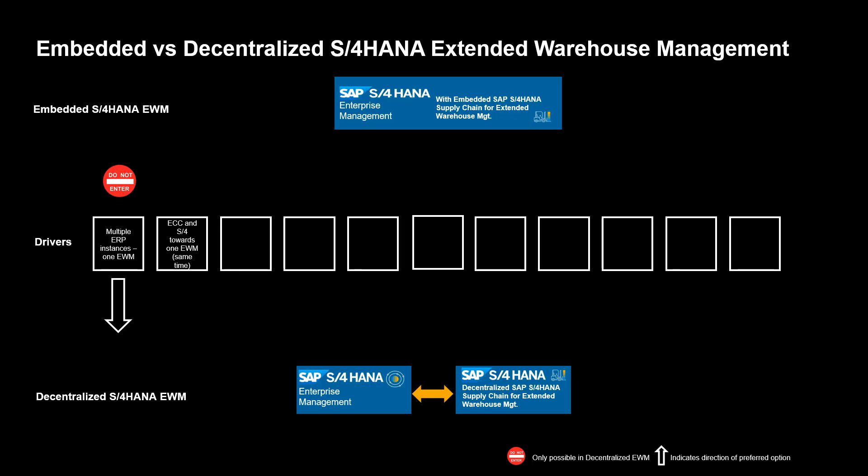Driver number two. Many organizations may see themselves in a situation where they, as part of their S4HANA transition, will be running legacy ECC and S4HANA at the same time. This may lead to the requirement to connect both ECC and S4HANA ERP to the same EWM system at the same time. If that's the case, the decentralized option is the only option. In fact, many organizations see this as an opportunity to make a head start on their S4HANA journey, getting the benefits of EWM early, and reducing the risk and complexity of the overall S4HANA transformation.